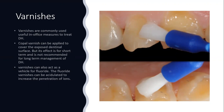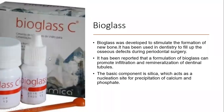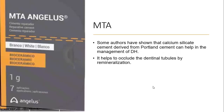Bioglass was developed to stimulate the formation of new bone and has been used in dentistry to fill osseous defects during periodontal surgery. A formulation of bioglass can promote infiltration and remineralization of the dentinal tubule; the basic component is silica, which acts as a nucleation site for precipitation of calcium and phosphate. MTA: calcium silicate cement derived from Portland cement can also help in the management of dentinal hypersensitivity by occluding dentinal tubules through remineralization.